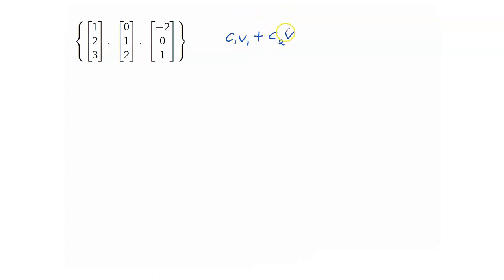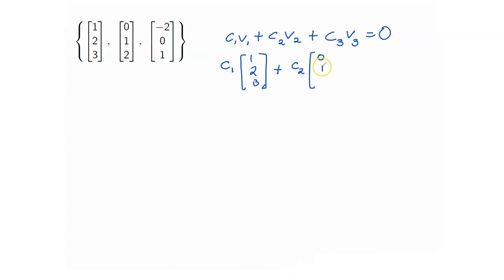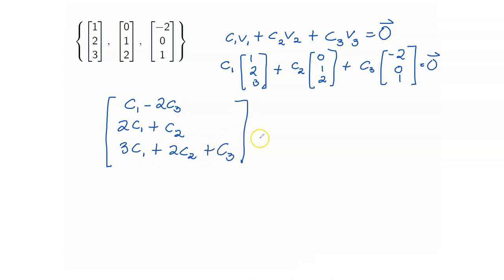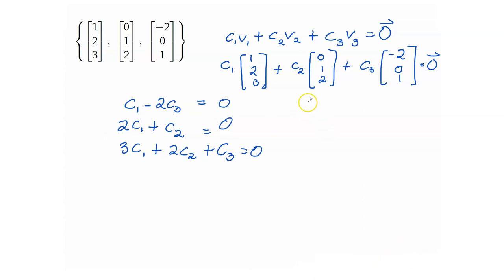Let us determine whether the following set of vectors in R3 is linearly independent or linearly dependent. To check for linear independence, we want to know if the solution to the vector equation C1·V1 + C2·V2 + C3·V3 = 0 is only the trivial solution or if there are non-trivial solutions. For the first entry we have C1 minus 2C3; for the second entry, 2C1 plus C2; and for the third entry, 3C1 plus 2C2 plus C3. This equals the zero vector (0, 0, 0). Since these two matrices are equal component-wise, let us now form our augmented matrix.